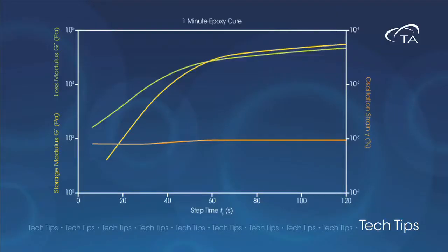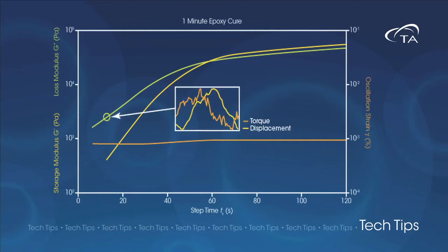A small strain amplitude must be used to measure the cured material, but it will give very poor resolution at the start of the test. This makes it difficult to measure the initial viscosity.